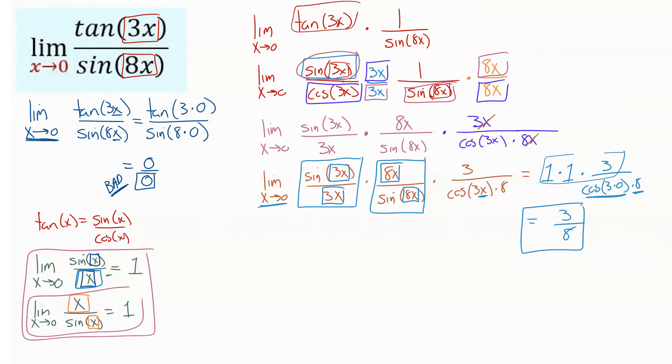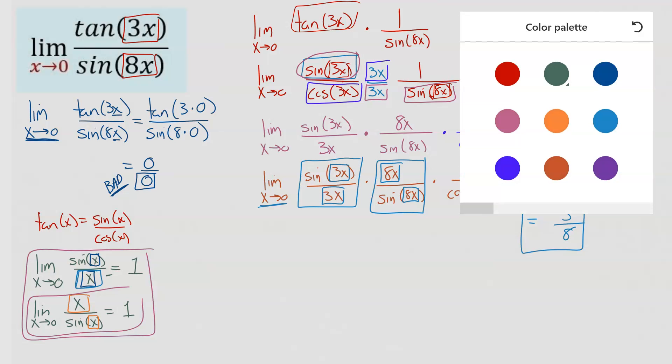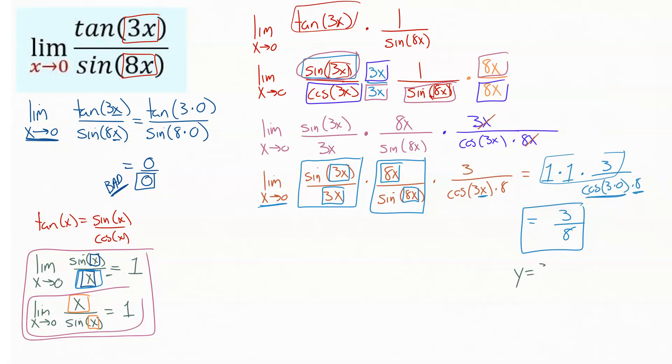So the limit as x approaches 0 of the tangent of 3x over the sine of 8x would be the value y equals 3 eighths. This definition is just about making sure you get the outside of the sine function to match the inside of the sine function. And it's always going to be by using these multipliers and doing the same thing on top and bottom.